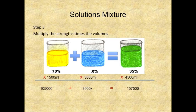Step 3. Multiply the strengths times the volumes. 70 times 1,500 is equal to 105,000, x times 3,000 is equal to 3,000x, and 35 times 4,500 equals 157,500.